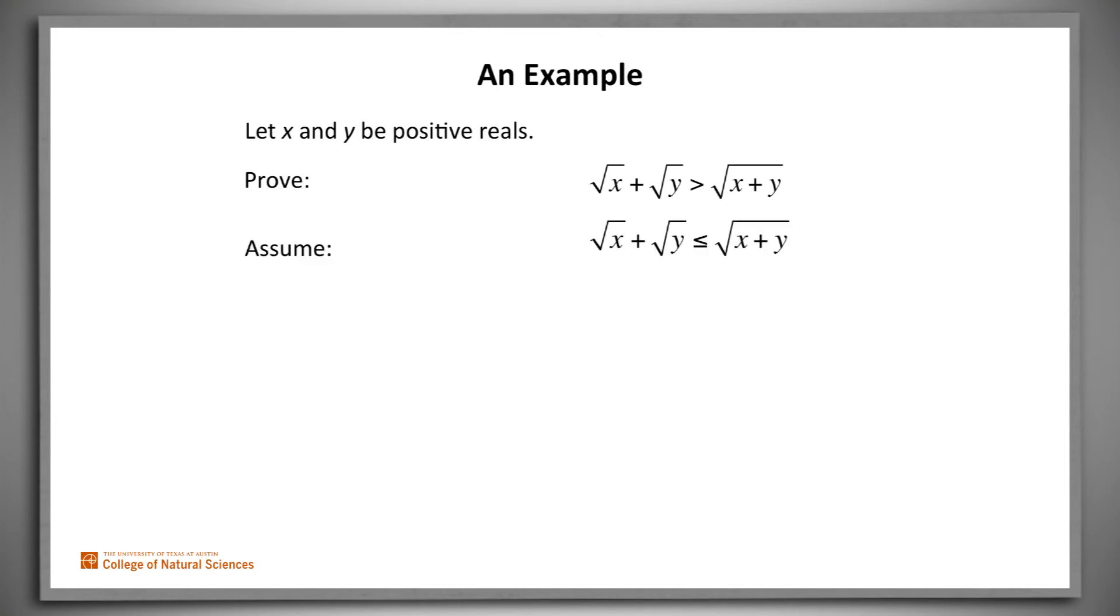We start by assuming that our claim is false. In other words, that the square root of x plus the square root of y is less than or equal to the square root of x plus y.